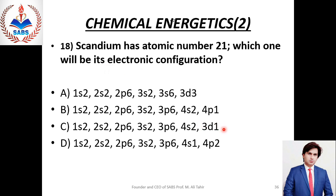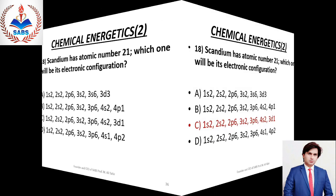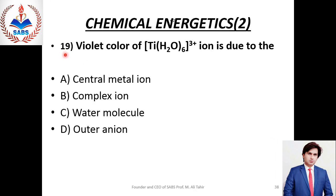Scandium میں D orbital کے پاس صرف ایک electron ہوتا ہے۔ ان چاروں options میں ایک option ایسی ہے جس میں D میں ایک electron ہے۔ Right option is Charlie. Next question No. 19: Violet color of a complex iron is due to — transition elements color show کرتے ہیں اور اس کی reason ہوتی ہے D-D transition۔ یہ D-D transition central metal atom کے اندر ہوتی ہے جس کے پاس D subshell ہوتا ہے۔ Right option is Alpha — central metal iron.